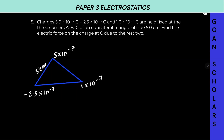Find the electric force on the charge at C. Let us label in the same order: A, B, and C. At A the charge is 5 × 10⁻⁷, B is minus 2.5, and C is 1 × 10⁻⁷.